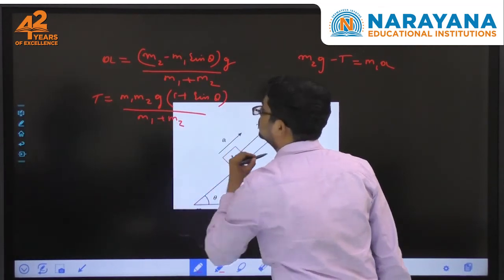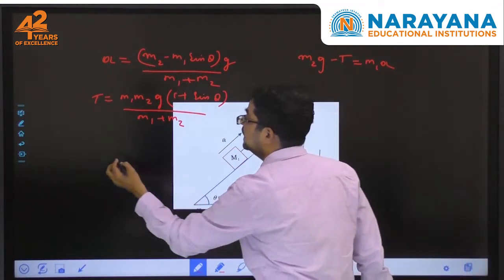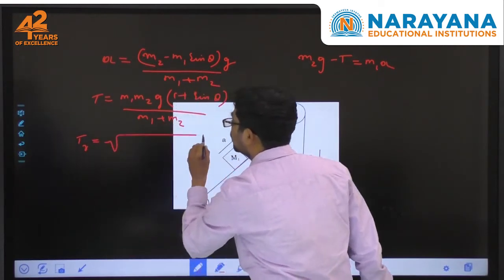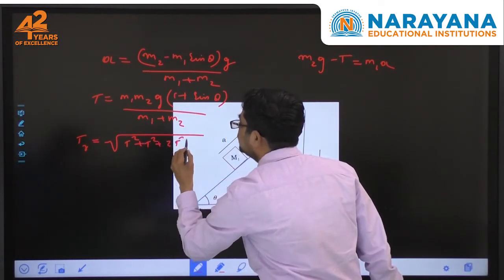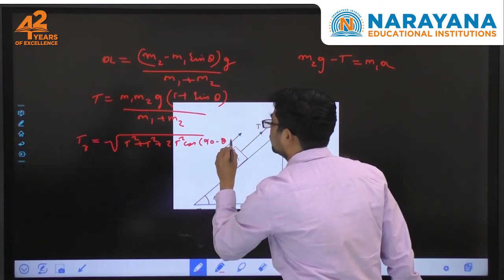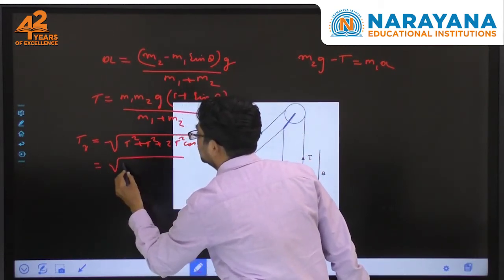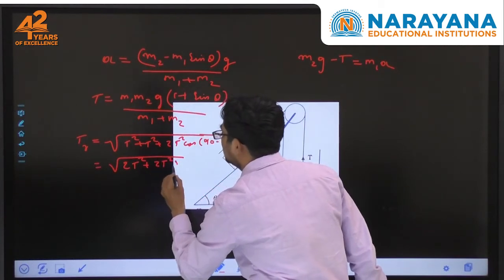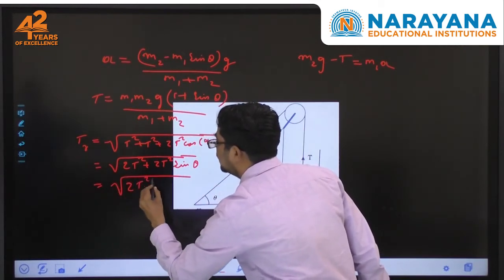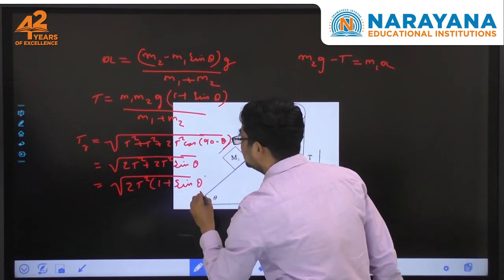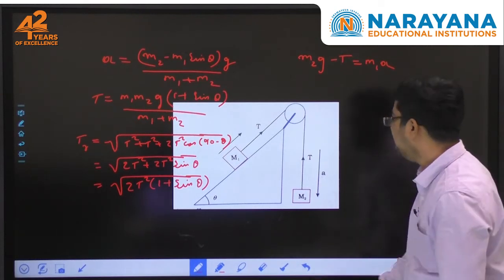The thrust acting on the pulley — which is the resultant tension — is given by: T_r equals root over (T² plus T² plus 2T²·cos(90° minus θ)), which simplifies to root over (2T² plus 2T²·sin θ). This is the value of the resultant tension acting upon the pulley.